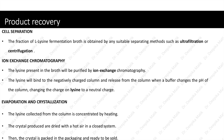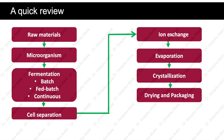Now let us have a quick review on the industrial production of lysine. The first step includes preparation of raw materials: carbon source, nitrogen source, inorganic salts, trace elements, and growth factors. After this, a suitable microorganism, mainly Corynebacterium glutamicum, is added to the fermenter. Fermentation is carried out by one of three approaches: batch fermentation, fed-batch fermentation, or continuous fermentation. After fermentation is complete, cells are separated from the fermentation broth by filtration or centrifugation. The broth is then purified by ion exchange chromatography. The liquid obtained is further subjected to evaporation and crystallization, and the crystals are packaged and sold.